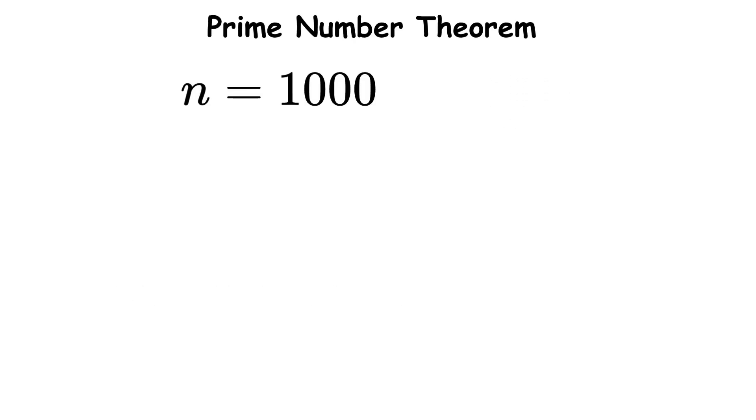Consider the number 1,000. The theorem predicts there should be approximately 1,000 divided by the natural logarithm of 1,000, which equals around 145 prime numbers. When you actually count them, there are 168 primes, showing that the approximation improves with larger numbers.